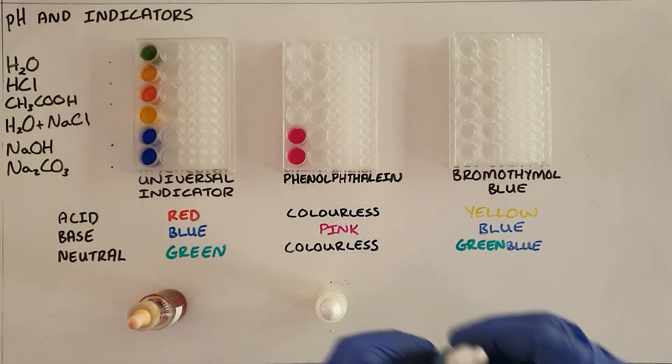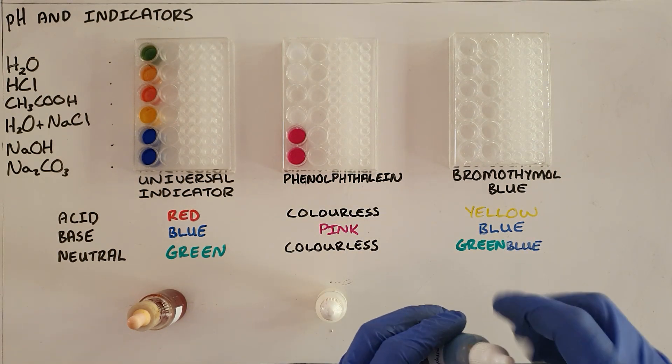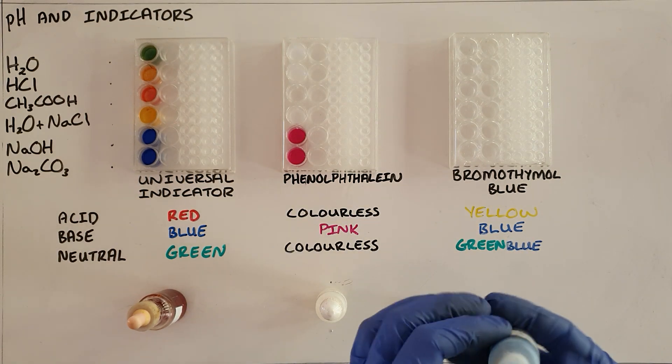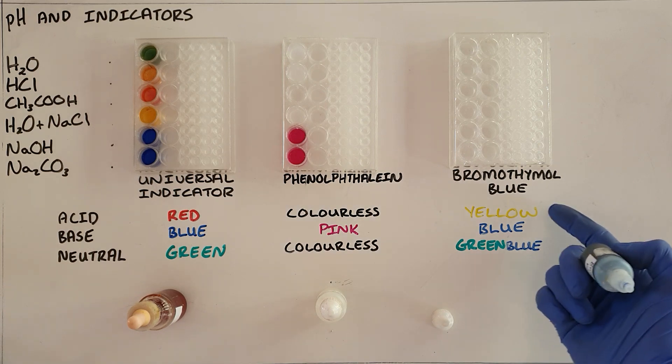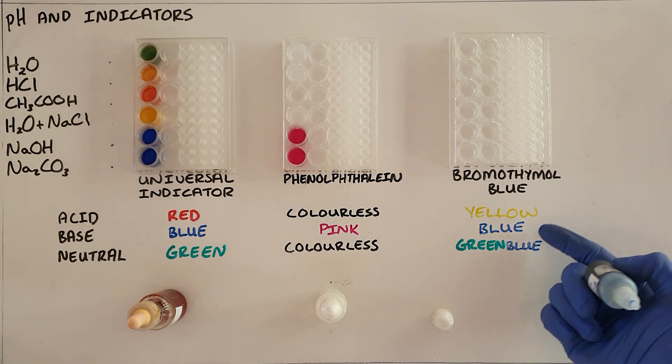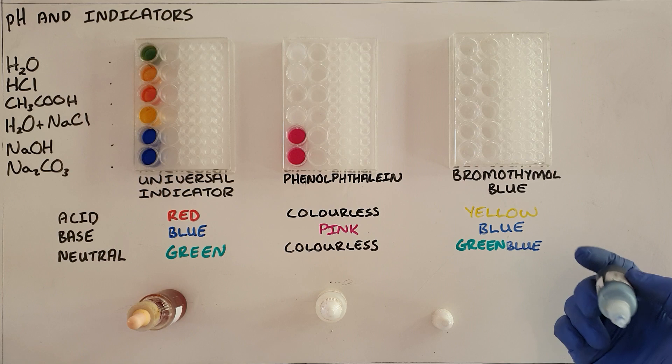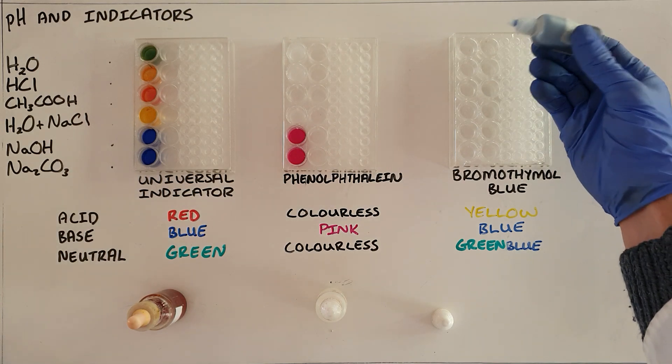The third indicator is bromothymol blue and we are going to follow the same process. We add one drop where now we expect it to turn yellow in an acid, blue in a base and a greenish blue in a neutral substance.